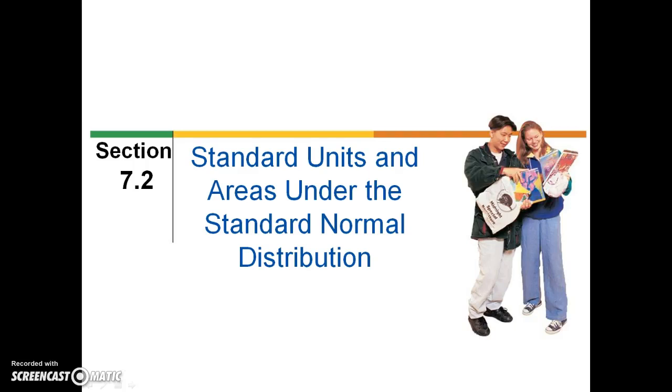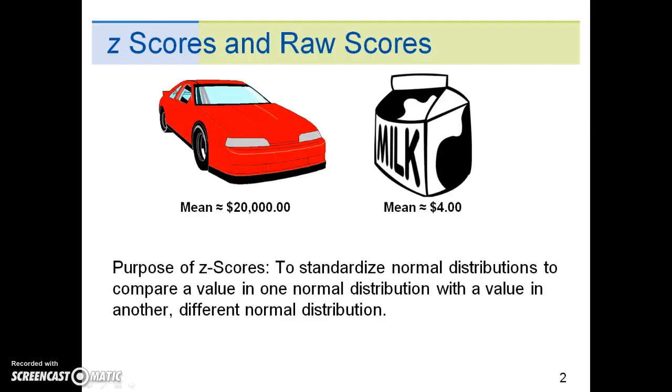Section 7.2 is on Standard Units and Areas under the Standard Normal Distribution. Let's say we wanted to compare the change in price of a new car to the price of a gallon of milk. Both prices are normally distributed, however, the mean price will be substantially different.